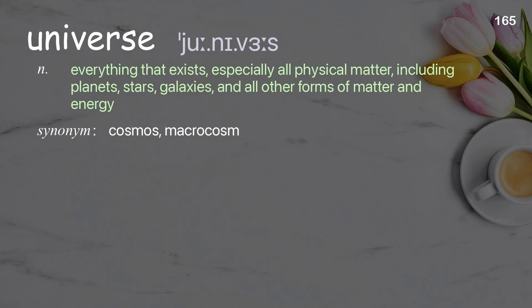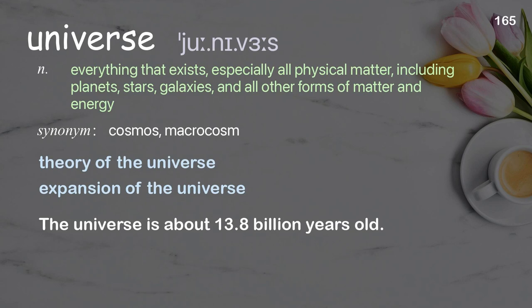Universe: everything that exists, especially all physical matter, including planets, stars, galaxies, and all other forms of matter and energy. Examples: theory of the universe; expansion of the universe. The universe is about 13.8 billion years old.